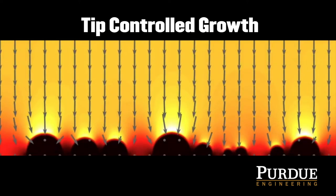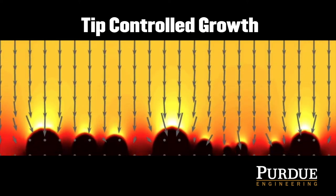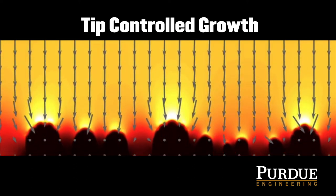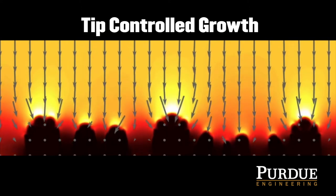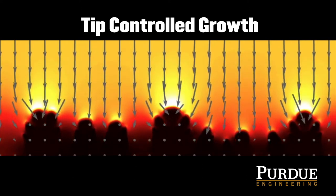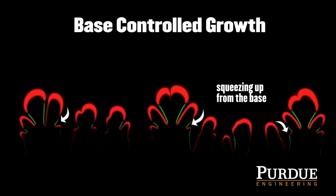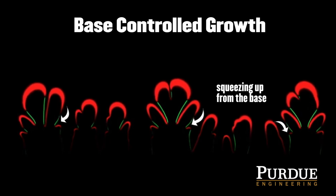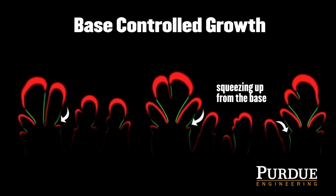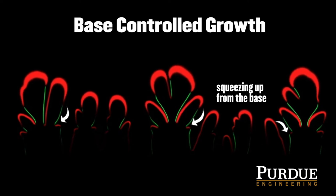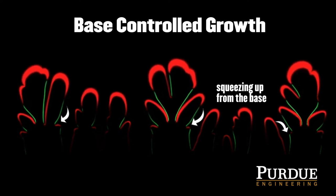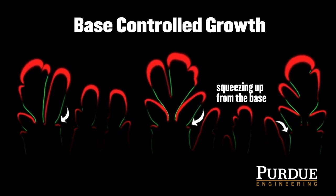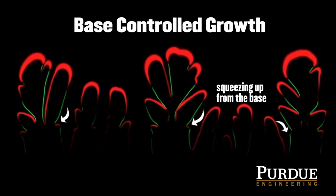There are two types of dendrite growth. The main one is called tip control, which is basically lithium comes from the top, from the counter electrode, deposits on the surface of the dendrite, and then advances the surface one step. In some cases, lithium still comes and instead of depositing there, it gets redistributed and induces some stresses in the dendrite, which will cause the dendrite to basically squeeze itself up from the base. That's called base control growth.